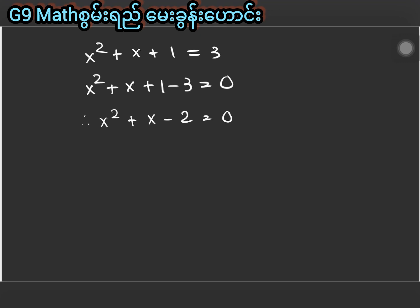Now we solve by factorization method. Factorizing the equation, we get x minus two multiplied by x plus one — wait, we factor x squared plus x minus two equal to zero.